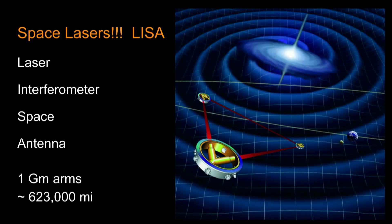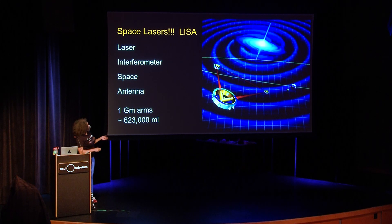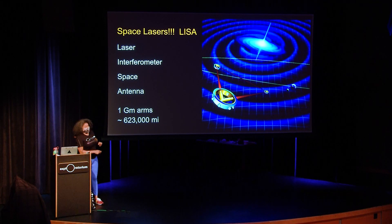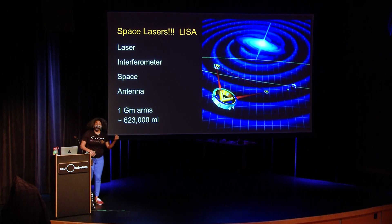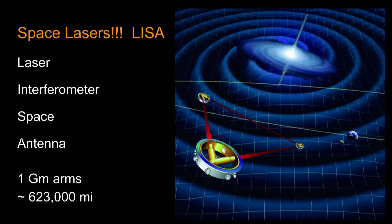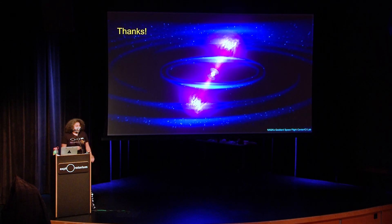The next thing you won't believe - space lasers! We're going to build an interferometer that goes in space called LISA. The arms will be one gigameter, which is like a million kilometers in length - a thousand times bigger than the diameter of the Earth. We'll build three satellites with lasers on them shot at each other. With these huge arms, we'll be able to measure way far back in time and space. This seems like science fiction but it's real - they're working on it right now and accepting grants. Thank you so much for your attention and interaction.